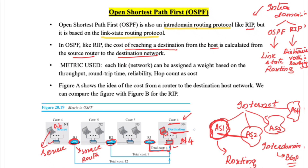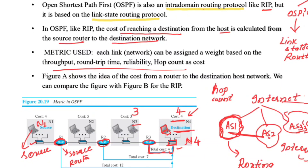In OSPF, the cost for any network is based on throughput, round trip time, reliability, or hop count — all four parameters can be considered to compute the cost. In contrast, RIP only considers hop count. Based on these parameters, the costs assigned are: N4 = 4, N3 = 3, N2 = 5, N1 = 4.